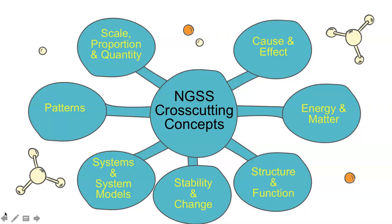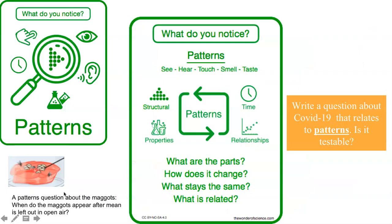More specifically, when our questions target one of these cross-cutting concepts, we can develop a coherent and scientifically-based view of the world. So this year we will practice asking questions that target each of these cross-cutting concepts. A cross-cutting concept is patterns. Observed patterns of forms and events guide organization and classification, and they prompt questions about relationships and the factors that influence them. What are the parts? How does it change? What stays the same? What is related? Is it a testable question?